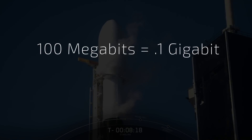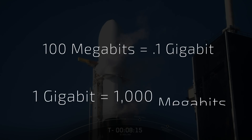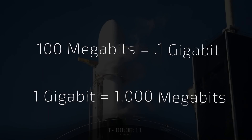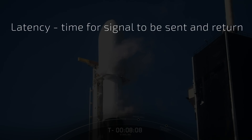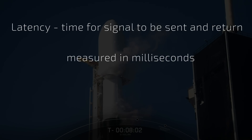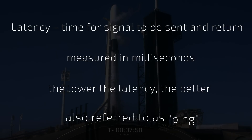For conversions, 100 megabits equals 0.1 gigabit, thus 1 gigabit equals 1,000 megabits. Latency refers to how much time it takes for a signal to travel to its destination and back. Latency is measured in milliseconds, so the lower the latency number, the faster the communication. This is also referred to as ping.